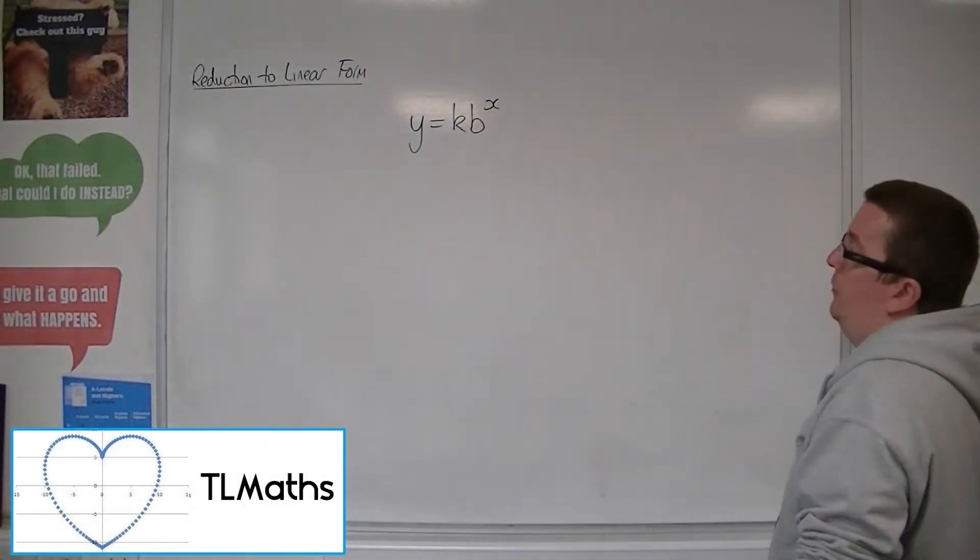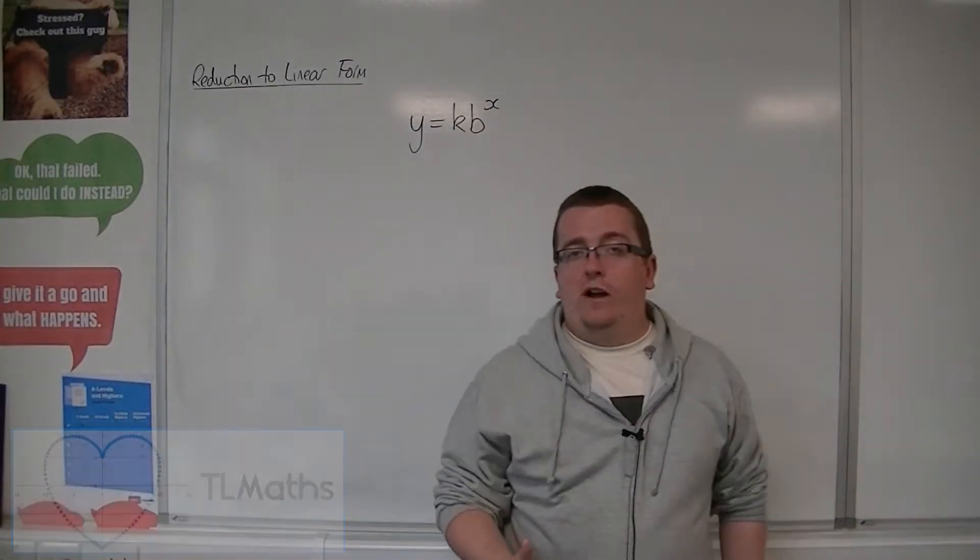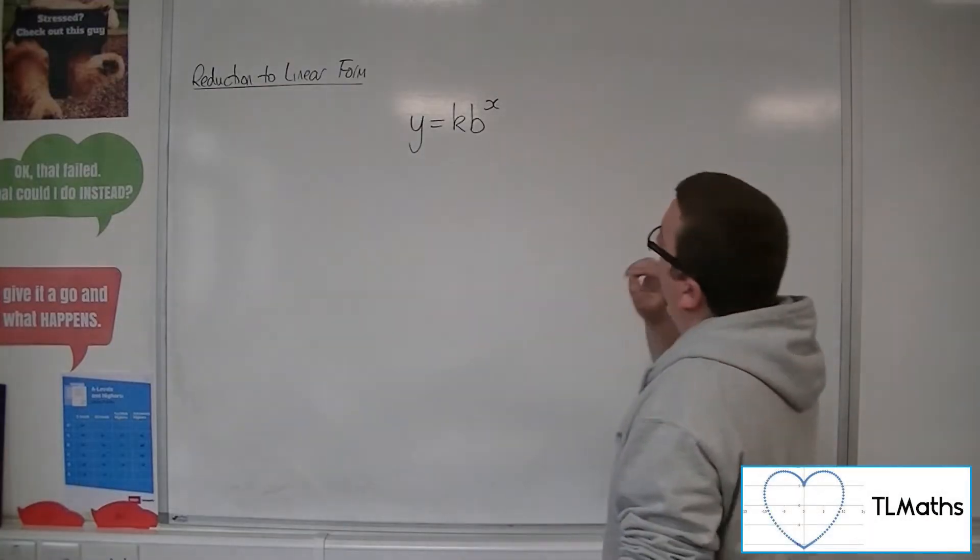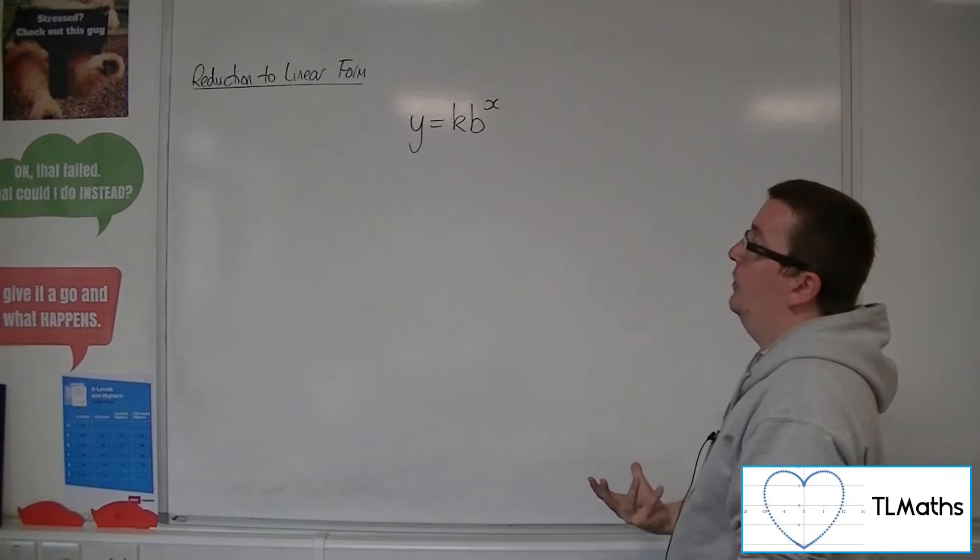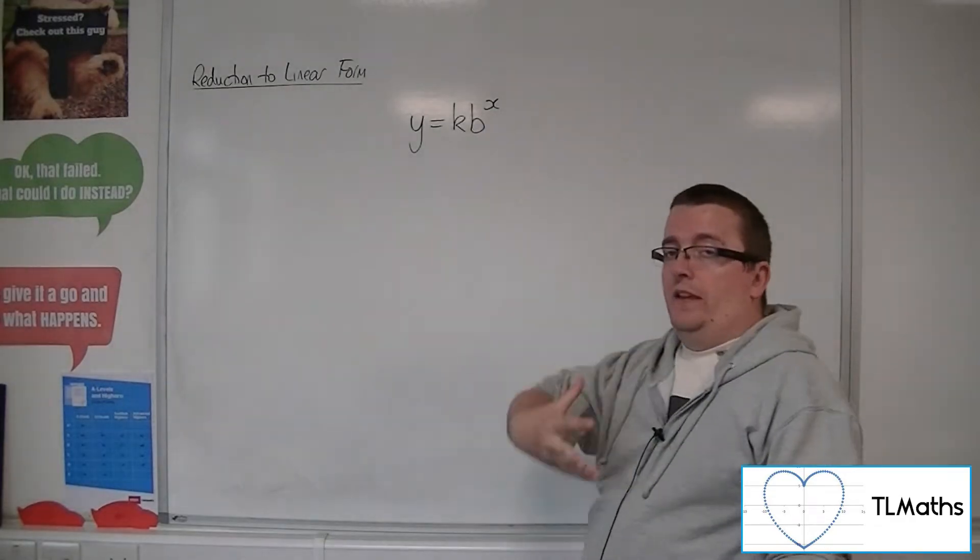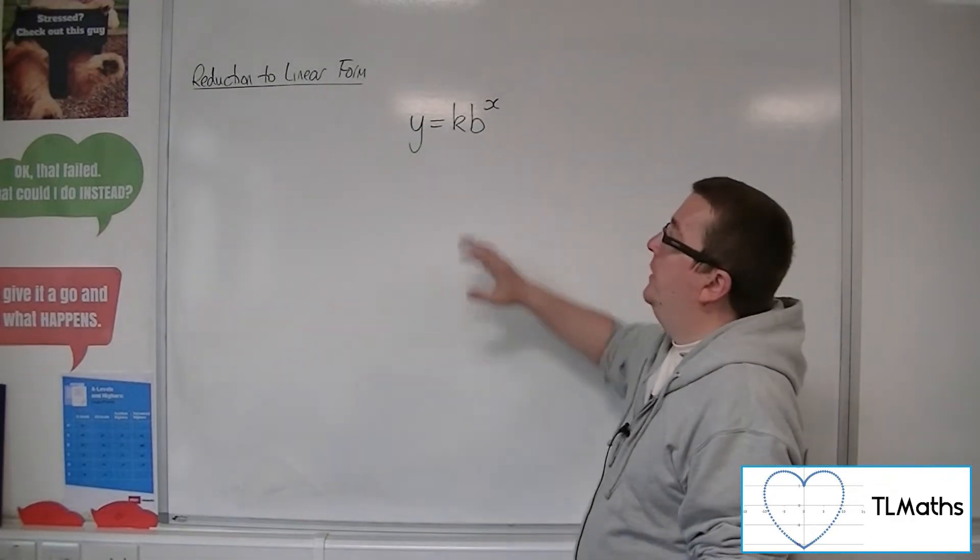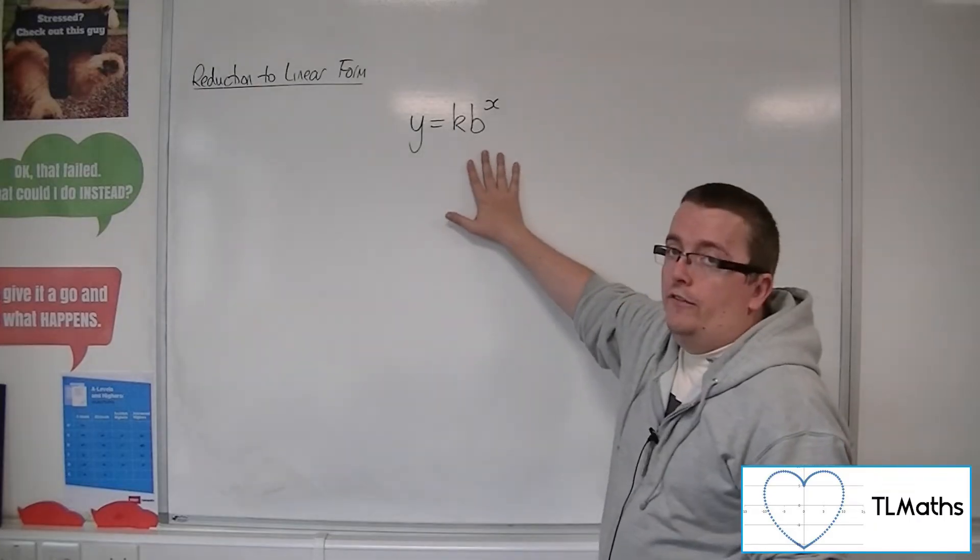So let's say the data that you've got on your graph now looks like it fits a function of the form y equals kb to the x. So we're now thinking of something that looks like an exponential graph here.